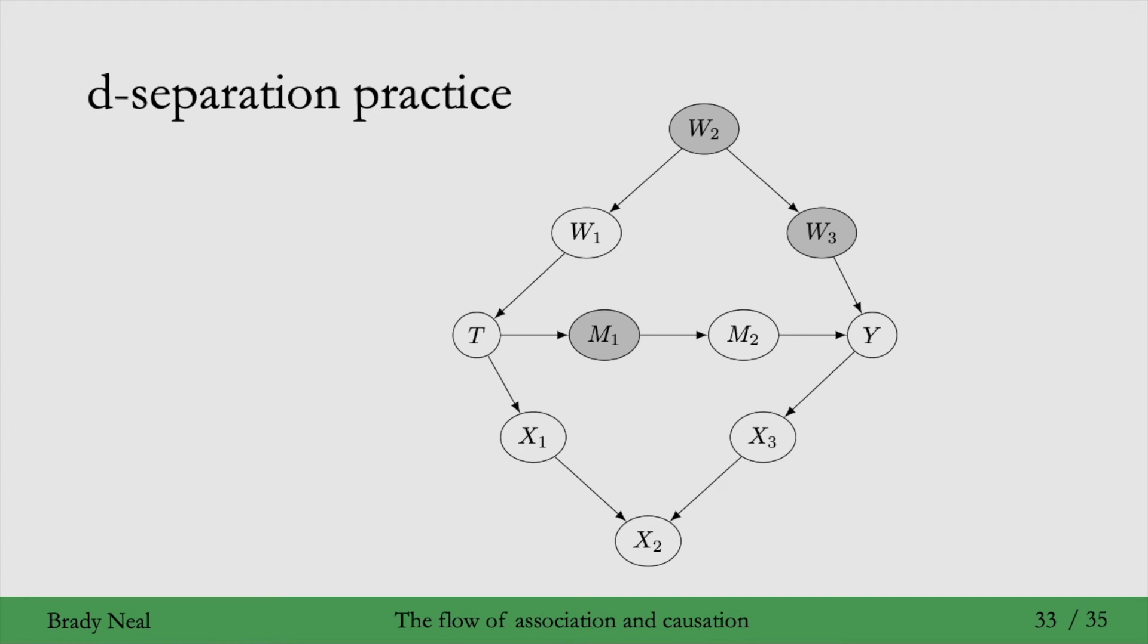What if we were to condition on X2? It turns out that conditioning on X2 unblocks the path that used to be going through the collider X2. So the path from T to X1 to X2 to X3 to Y. So when we condition on X2 here, because we unblock that path, T and Y are actually not d-separated given this conditioning set.